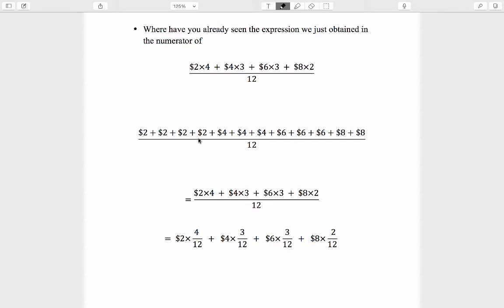But when we gather up like terms, when we gather up the four copies of 2 and write it as $2 times 4, and the three copies of $4 and write them as $4 times 3, etc., we realize that this expression is the same thing as $2 times 4 twelfths, plus $4 times 3 twelfths, plus $6 times 3 twelfths, plus $8 times 2 twelfths.